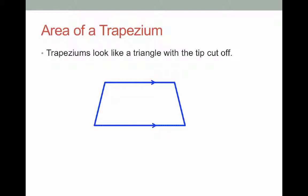When finding the area of a trapezium, you'll be given three variables. You'll be given the length of the height, and the length of one parallel side, and the other parallel side. And here's what you need to do with them.